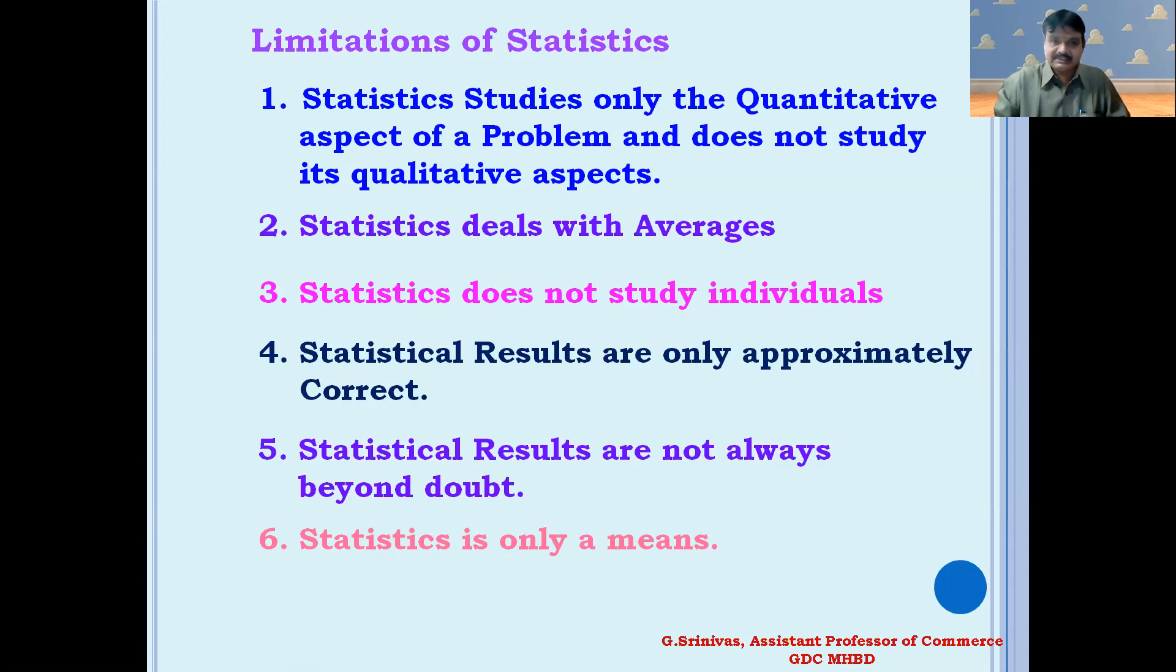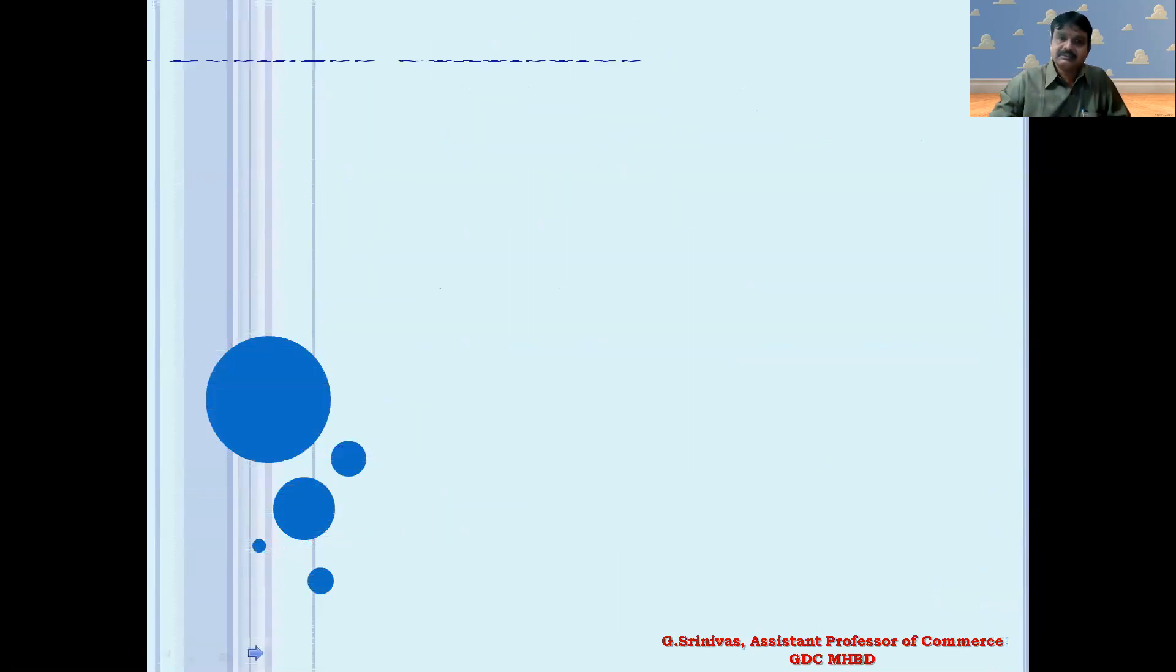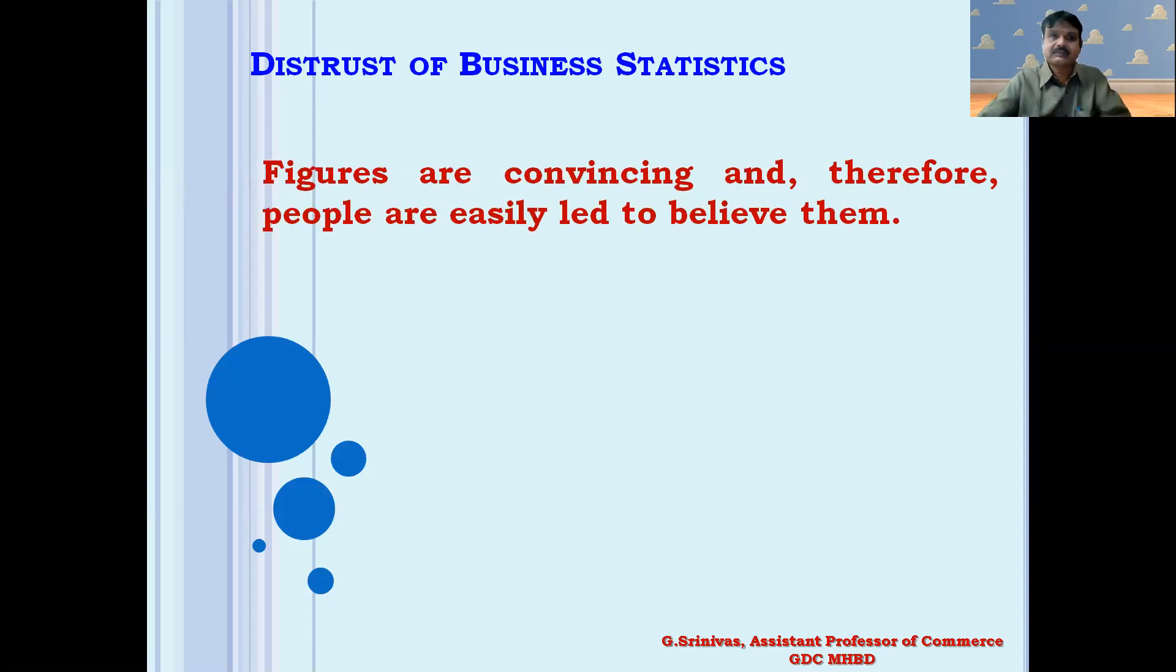Though statistics has some limitations, no one is more aware of the limitations of statistics than the statistician. He regards the subject as a gardener regards a sieve or a mechanic regards a box spanner—that is, as an implement which has a useful, particular, and limited function. Because of the limitations of statistics, it leads to distrust of business statistics.